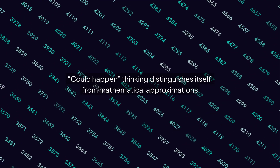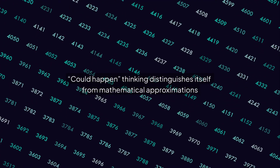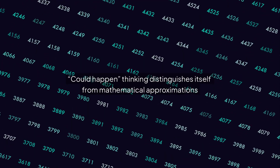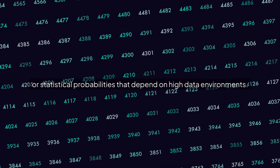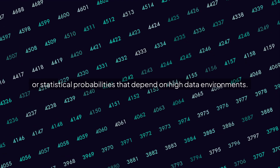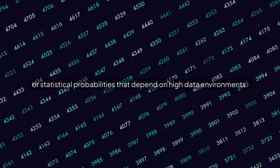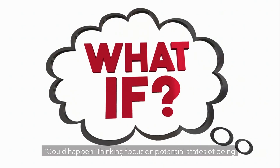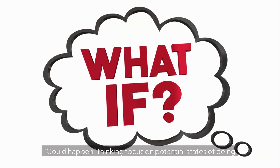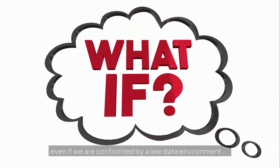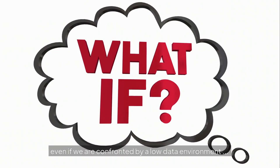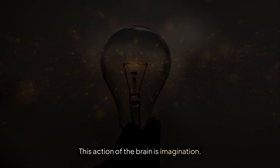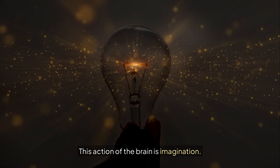Could-happen thinking distinguishes itself from mathematical approximations or statistical probabilities that depend on high-data environments. Could-happen thinking focuses on potential states of being, even when confronted by a low-data environment. This action of the brain is imagination.